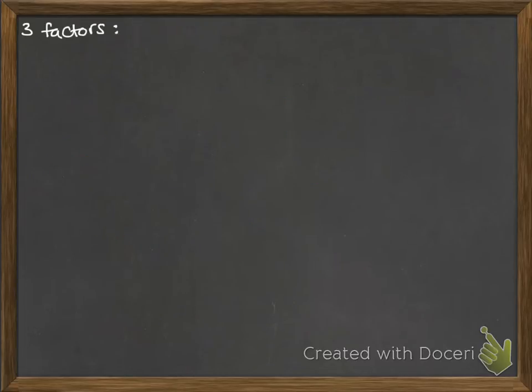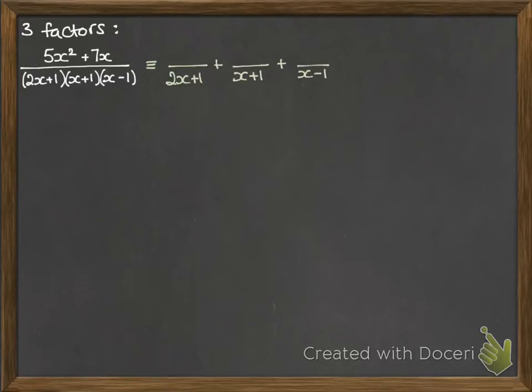Okay let's have a look at what happens if we have three factors on the bottom of our fraction. Something like this. You should be able to logically see where this is going. So this would separate out into three fractions with our A, B and C at the top.